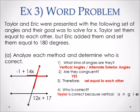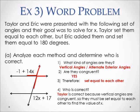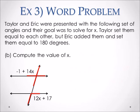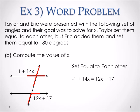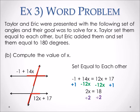Taylor is correct because vertical angles are congruent, so they must be set equal to each other to find the value of X. For part B, compute the value of X. We set negative 1 plus 14X equal to 12X plus 17. Add 1 to both sides, then subtract 12X from both sides to get 2X equals 18. Divide both sides by 2 to get X equals 9.